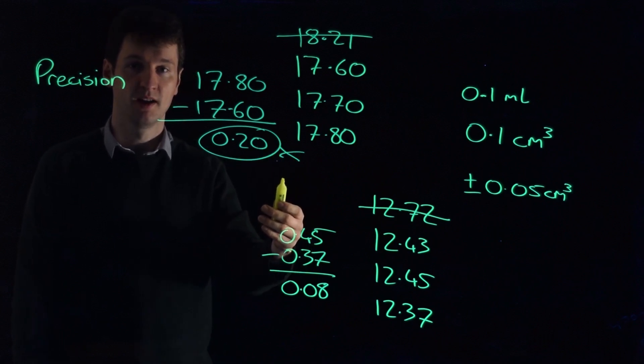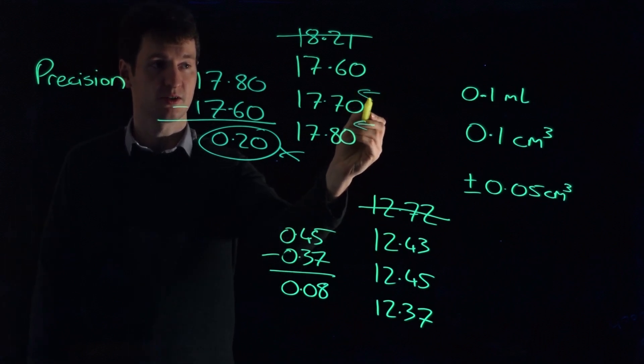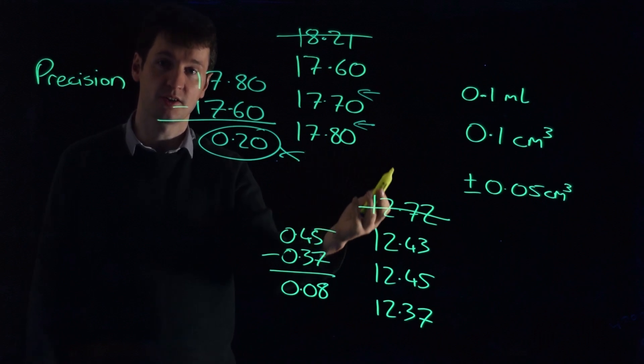Well, repeat it a third time. And chances are it will either fall into between these two results or between these two results, in which case you can discard your outlier.